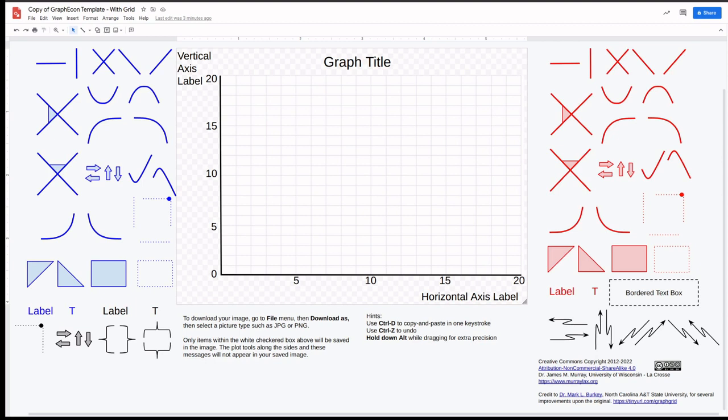I have opened a copy of the GraphEcon template with a grid. This is one of three GraphEcon templates to use, this one being distinguished from the others with a grid background that can be used to identify particular points along a line or a curve.